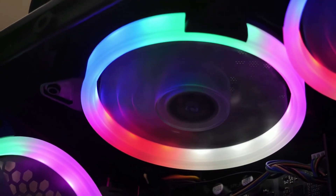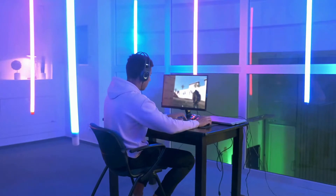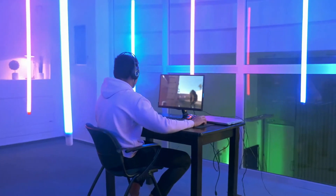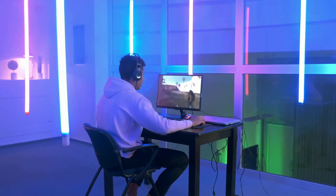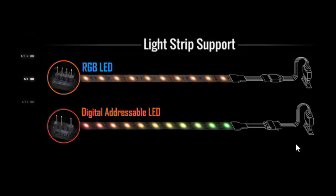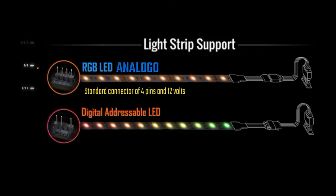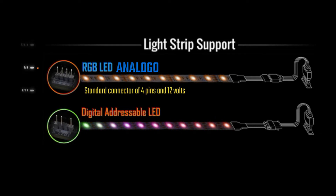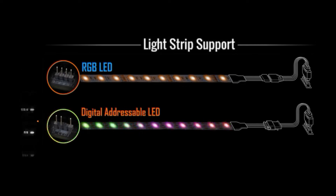Let's start from the base. RGB is analog, has a standard connector of 4 pins and 12 volts, and uses more power. ARGB, or digital RGB, has a standard connector of 3 pins and 5 volts. It maintains the 4-pin thickness format but only brings 3 pins.